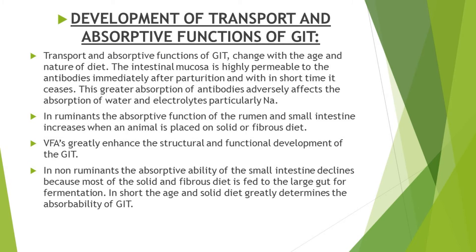Now let's come to the development of transport and absorptive functions of the GIT. These functions also change with the age and diet of the animal. After parturition the calf is fed colostrum, which contains antibodies. The intestinal mucosa of the calf is highly permeable to antibodies immediately after parturition, but this permeability ceases after a short time. In ruminants, the absorptive function of the rumen and small intestine increases when an animal is placed on a solid or fibrous diet, because fermentation produces volatile fatty acids which are then absorbed in the rumen and small intestine.